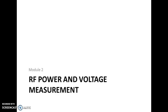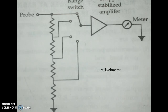The rectification process is done using diodes, but at RF frequencies normal diodes do not function. So we have specialized diodes like the Schottky barrier diode and the point contact diode, which help us rectify an RF frequency signal.